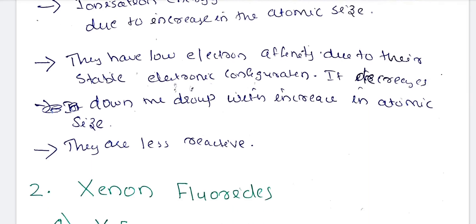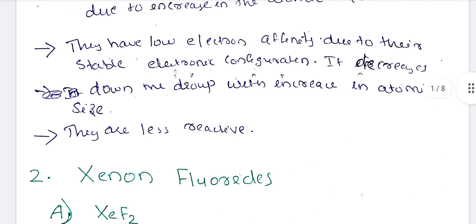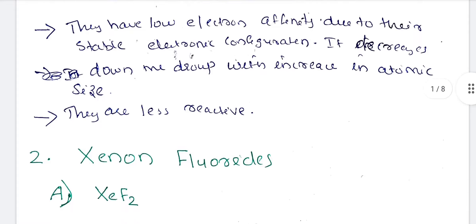The ionization energy decreases down the group due to increase in atomic size. As atomic size increases, attractive force decreases, so ionization energy is low. They have low electron affinity due to their stable electronic configuration. They are less reactive.